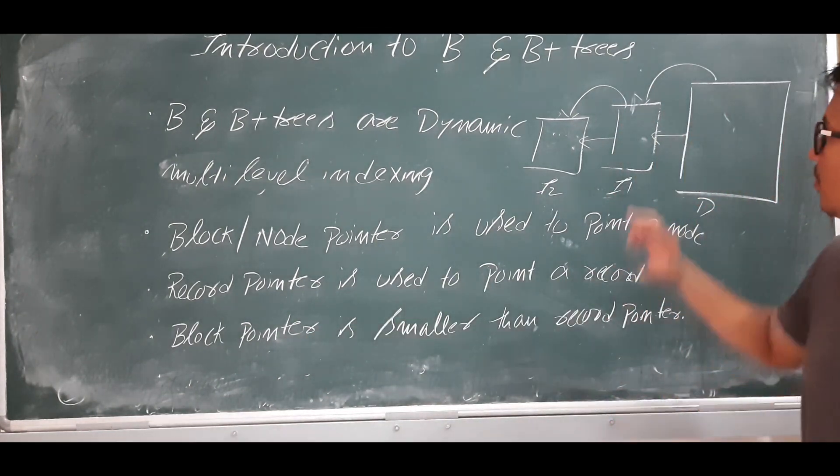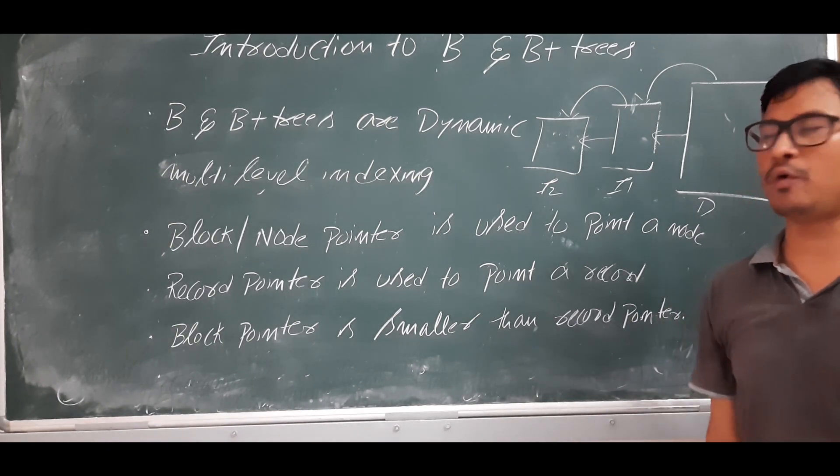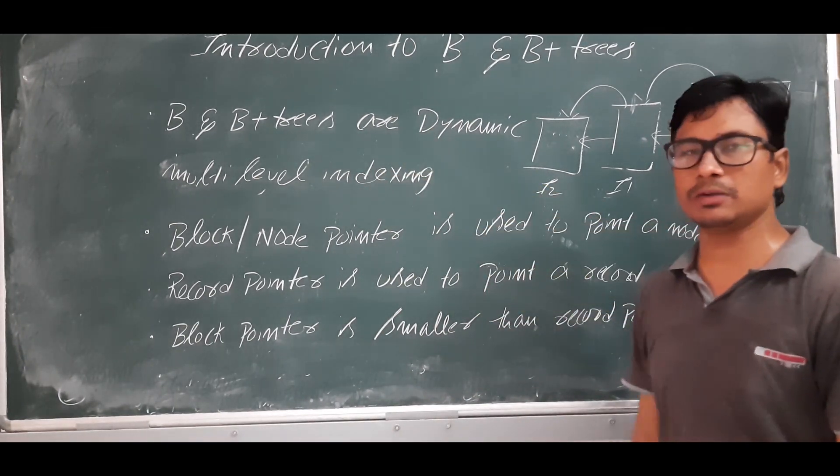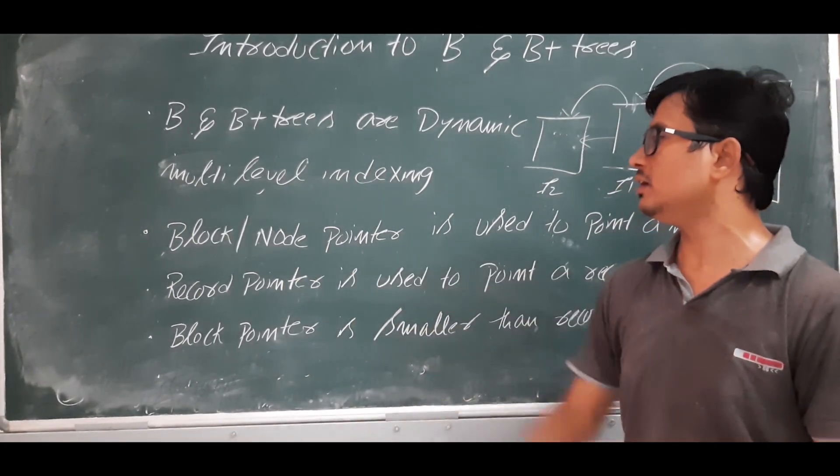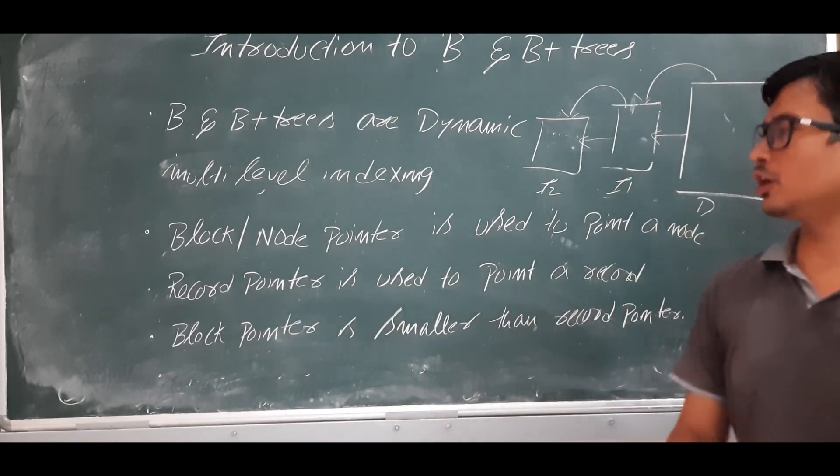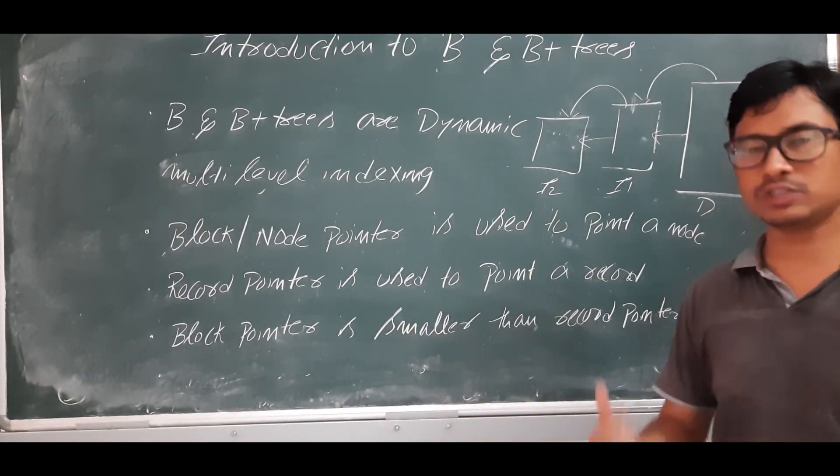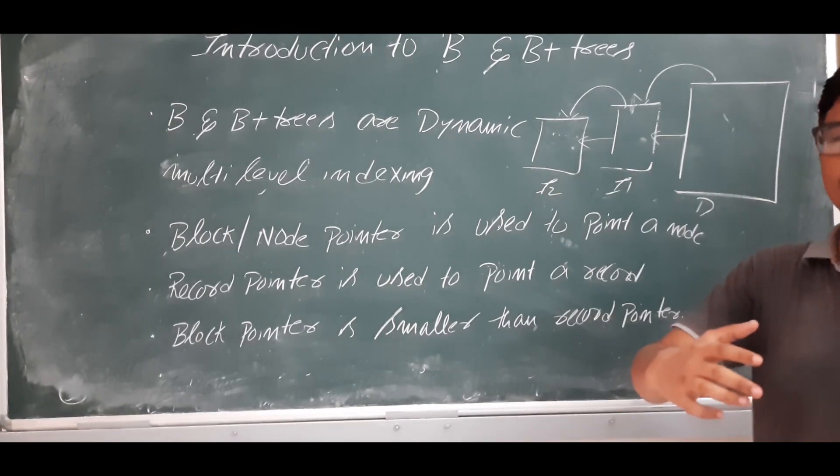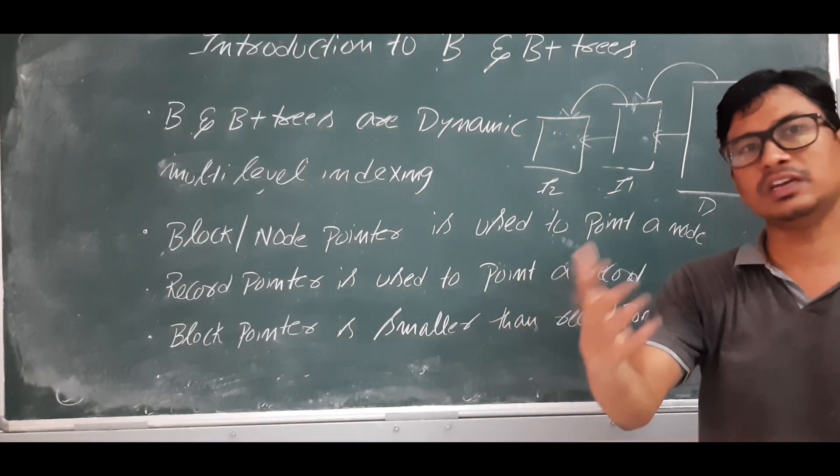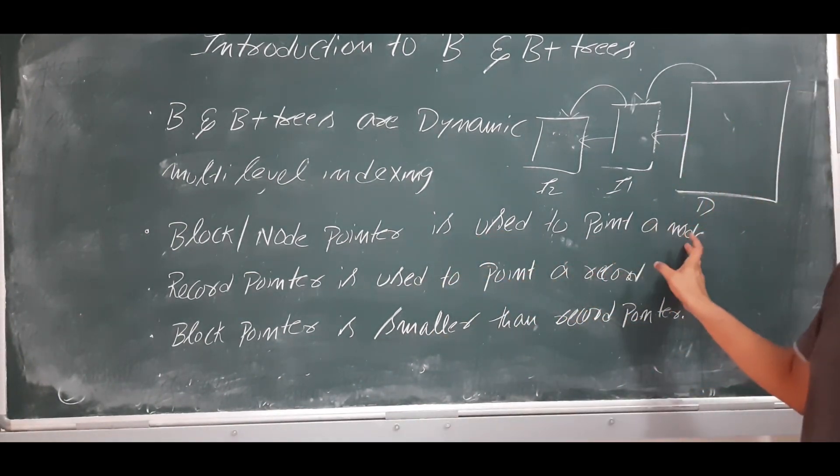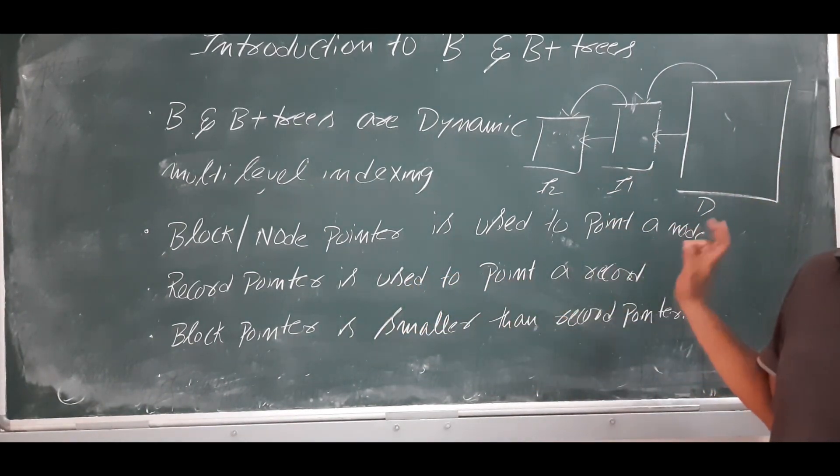Normally in the index file we have only two attributes: one is the key value and block pointer. Whereas in B trees and B+ trees we have key values, node pointer or block pointer, and even a record pointer. Why do I call it a node pointer? Because B and B+ trees are trees, so each one we can call it as a block or we can call it as a node.